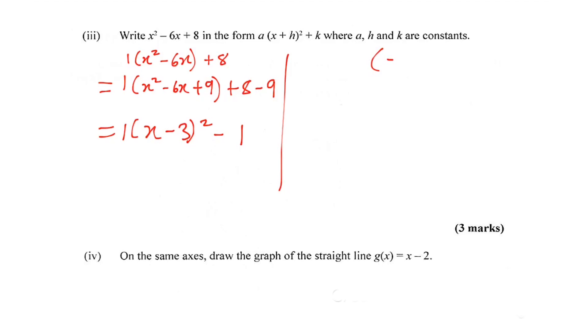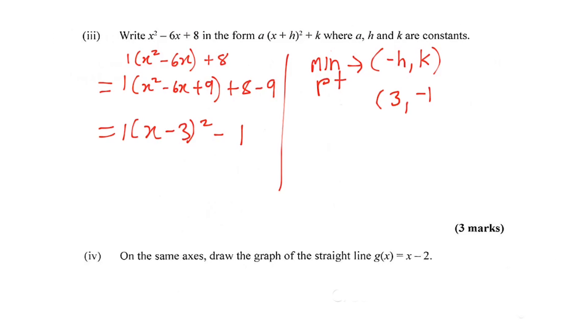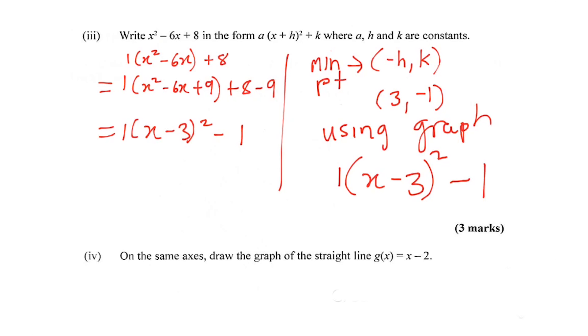We talked about this in the last video, but the minimum point in a quadratic always lines up to (-h, k) when you have the completed square form here. So if the minimum point is (-h, k) and the minimum point is (3, -1), then all I can do is say using the graph, a is 1 from the original equation, x - 3, and k which is -1. So this was the quickest, easiest way to do it—just use the graph and use the knowledge that the minimum point represents (-h, k) in this form.